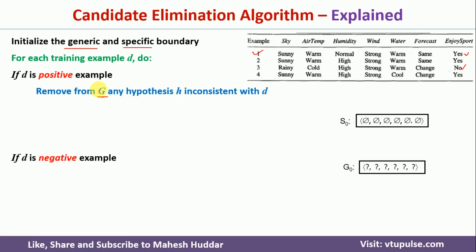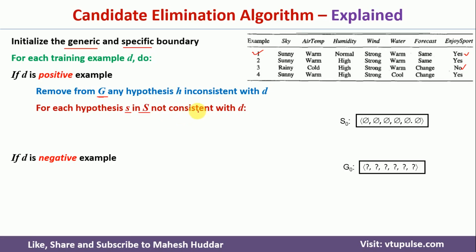Once we process the generic boundary, we go to the specific boundary S. We consider one hypothesis at a time from S and check whether it is consistent with the current example. If it is consistent, we do nothing. If S is inconsistent with the current training example D, we remove that particular hypothesis from S.